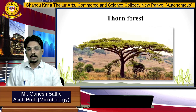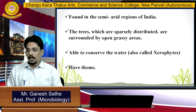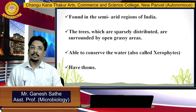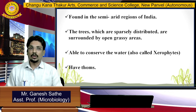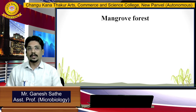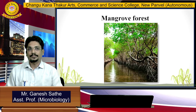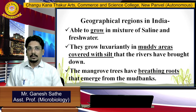This is an image of thorn forest. Thorn forests are found in the semi-arid regions of India. The trees are separately distributed and surrounded by open grassy areas. They are able to conserve water and therefore have thorns.